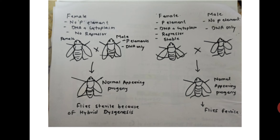The P element has been used in Drosophila research as a mutagen. The mutagenesis system typically uses an autonomous but immobilized element and a mobile non-autonomous element; flies from the subsequent generation can then be screened by phenotype or PCR. The naturally occurring P elements contain coding sequence for the enzyme transposase and the recognition sequences for transposase action.